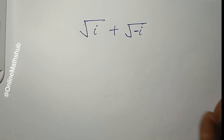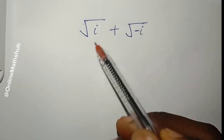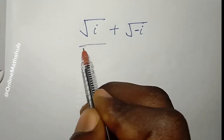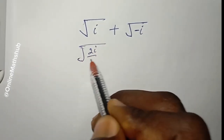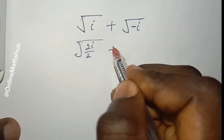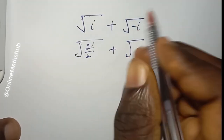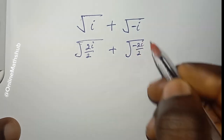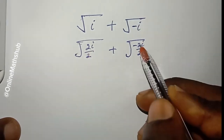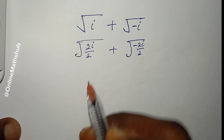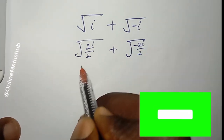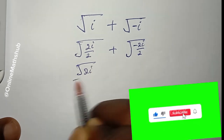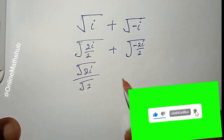Hello everyone, welcome back. This is how you can compute √i + √(-i). I'm going to write √i as √(2i) divided by 2, and also write √(-i) as √(-2i) divided by 2. Note that 2 divided by 2 is 1, so we can write this as √(2i) divided by √2, plus √(-2i) divided by √2.